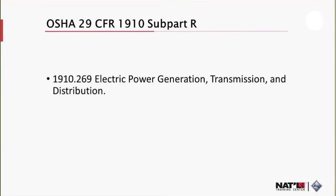Subpart R covers special industries. Specifically, our interest here is in 1910.269, which covers electric power generation, transmission, and distribution. This section covers the operation and maintenance of electric power generation, control, transformation, transmission, and distribution lines and equipment. These provisions apply to basically everything associated directly or indirectly with generation, transmission, and distribution of electricity.